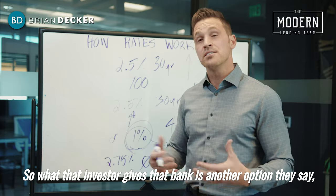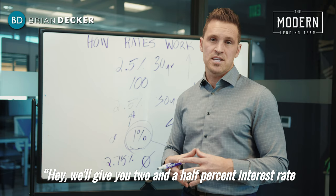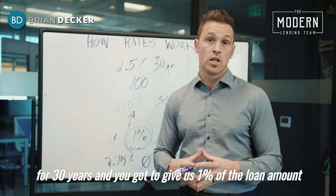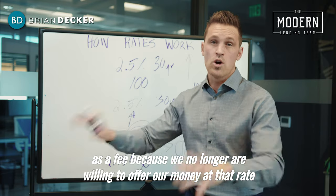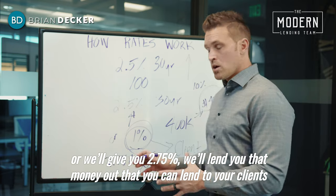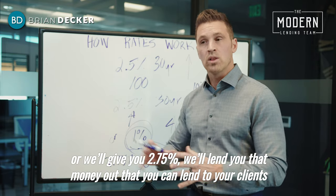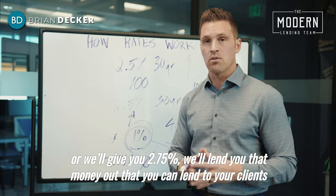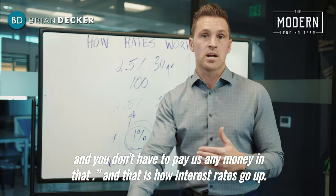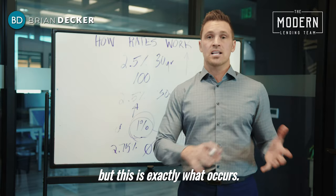The investor gives the bank another option. They say, 'We'll give you a 2.5% interest rate for 30 years, but you've got to give us 1% of the loan amount as a fee because we're no longer willing to offer our money at that rate — or we'll give you 2.75%, and you don't have to pay us any money upfront.' And that is how interest rates go up. This was an exaggerated example, but this is exactly what occurs.